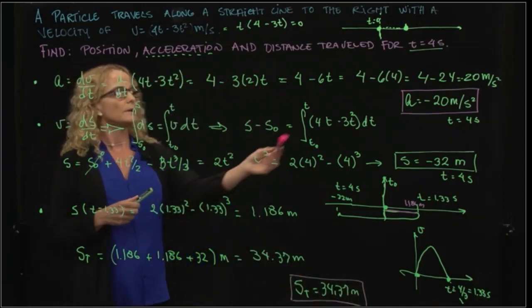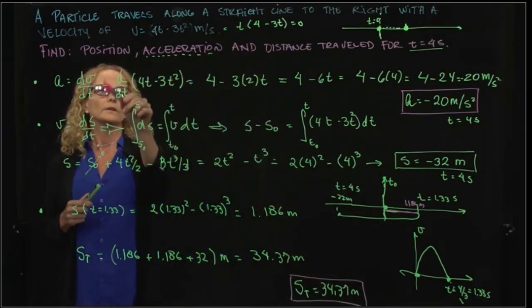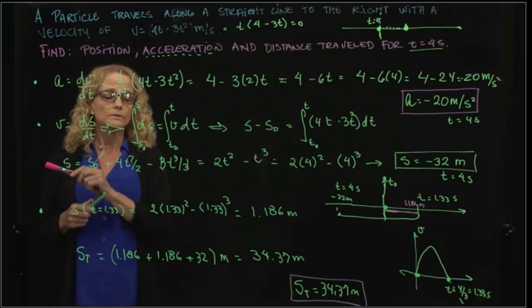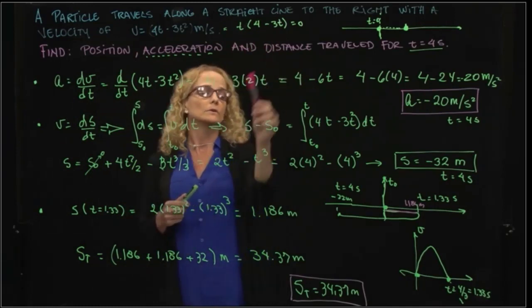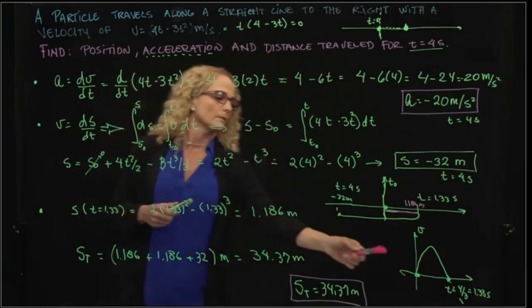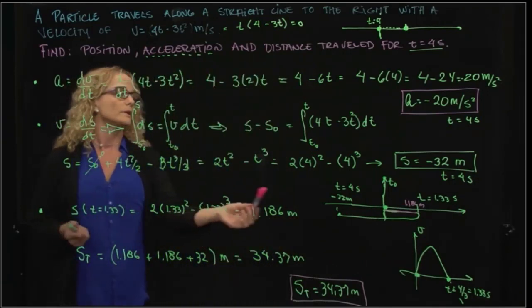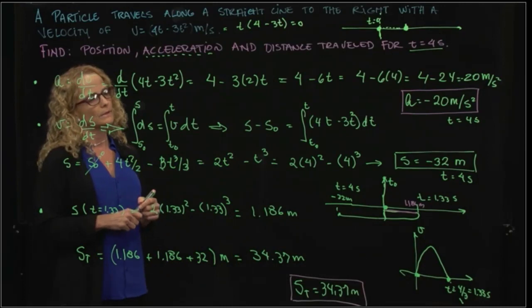So we answered the three questions that we were asked. Acceleration by deriving the velocity, position by integrating the velocity, and the distance traveled by analyzing the formula of our velocity. And then we discovered that we traveled more distance than just the 32 meters for the t = 4 seconds.